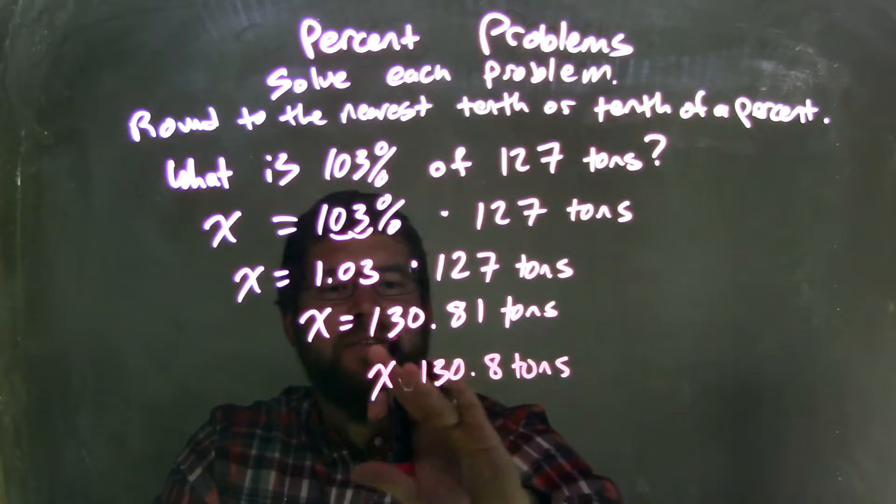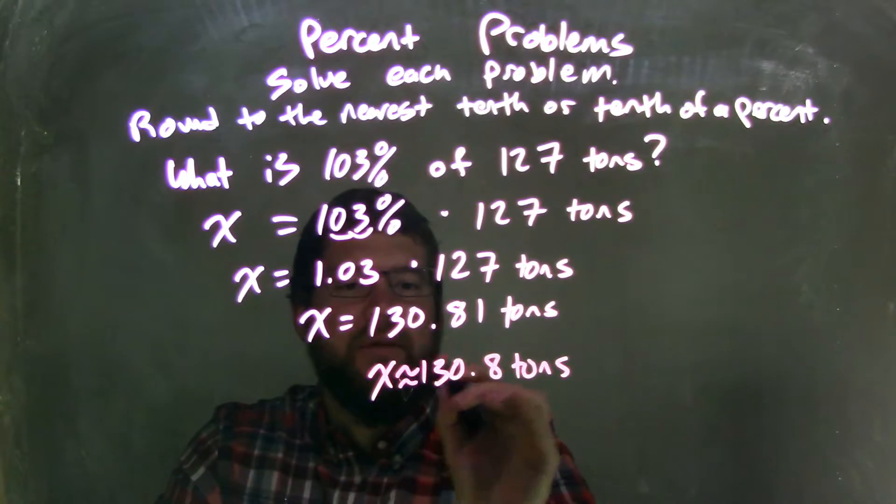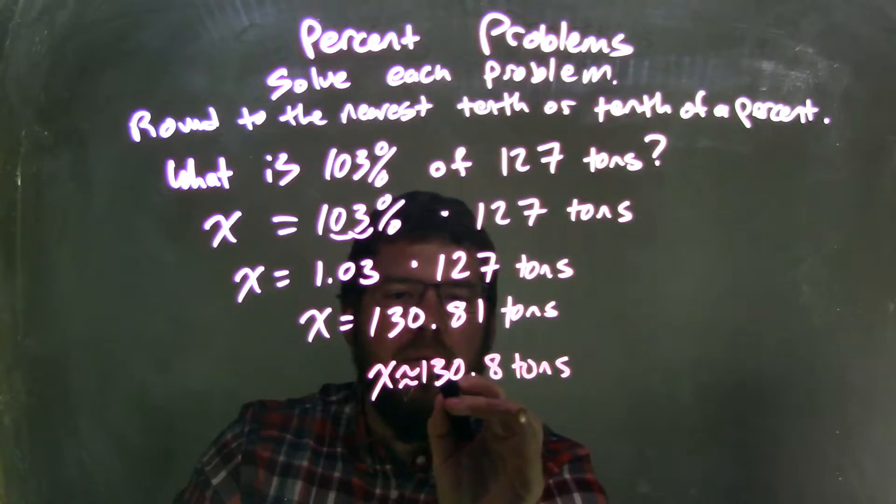And that's actually approximate because I just rounded. So we have x is approximately equal to 130.8.